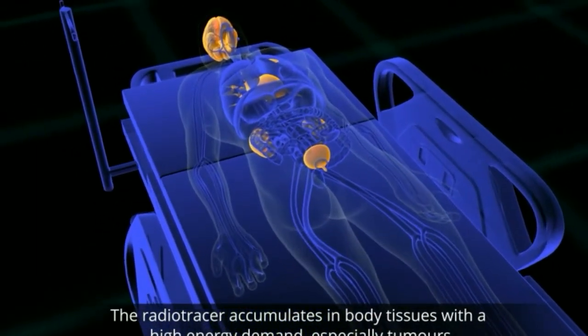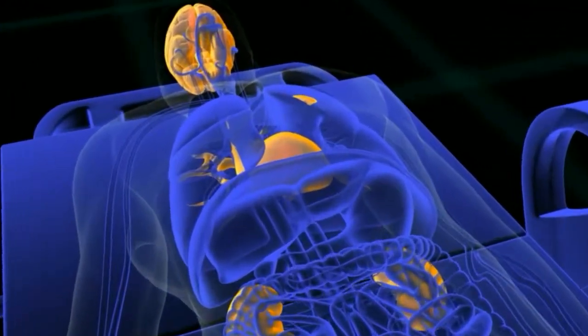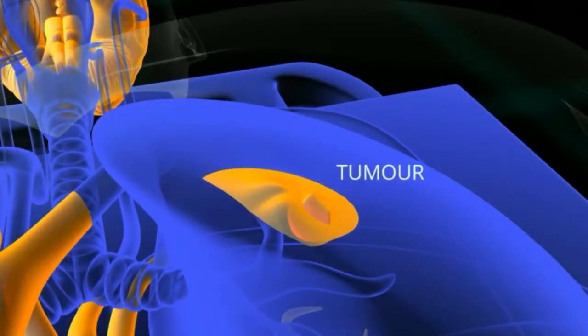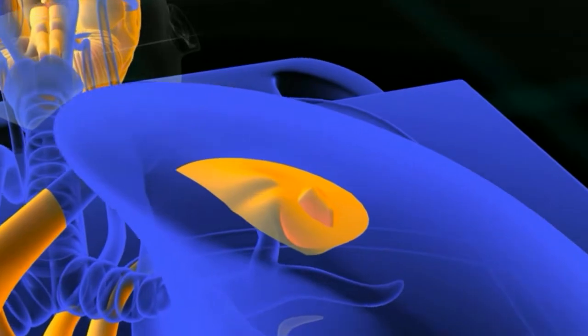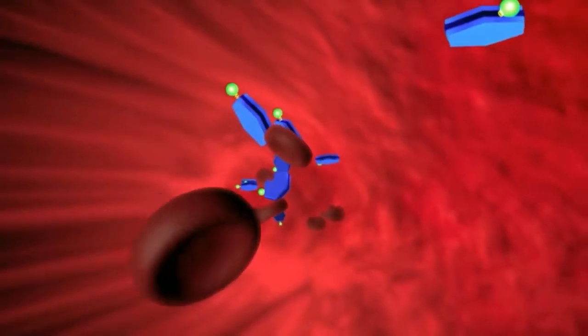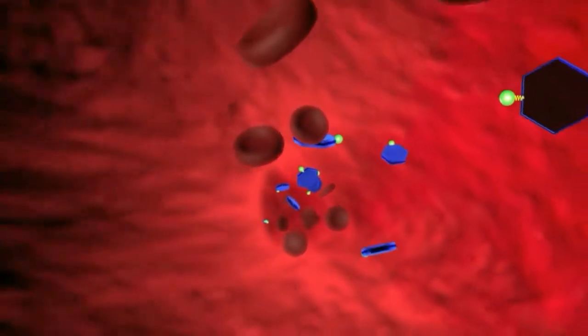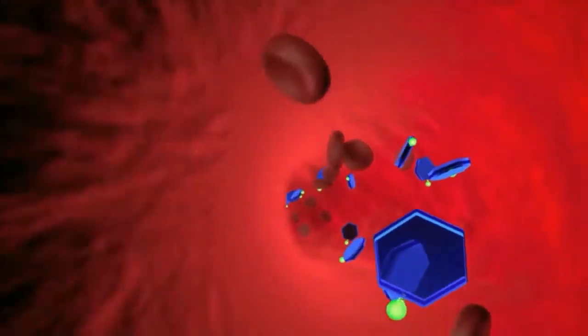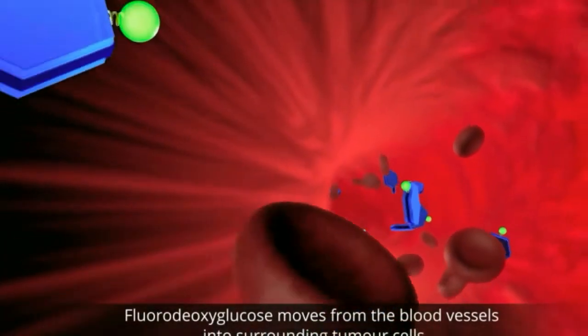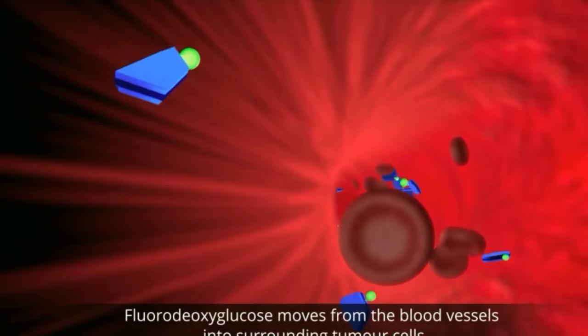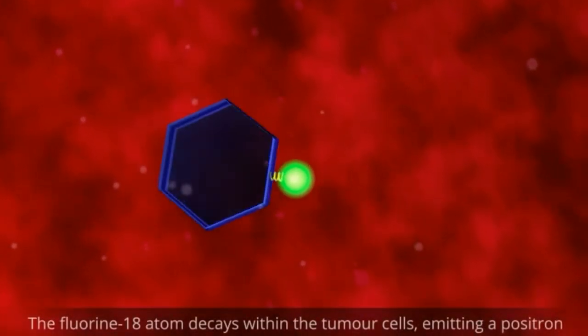As you can see, as it says down there, the tissues that tend to gobble the sugar, it collects at a greater concentration in those tissues. So the little green ball is supposed to be the radioactive fluorine. And hexagons there are the sugar.